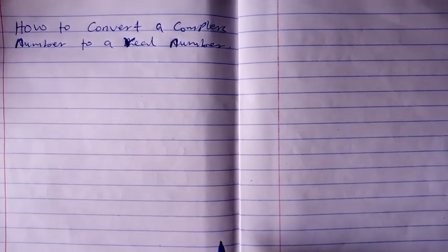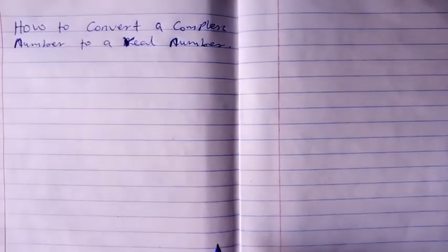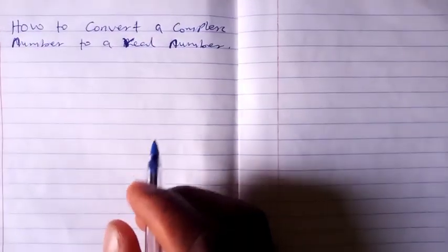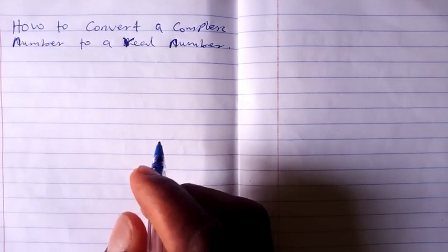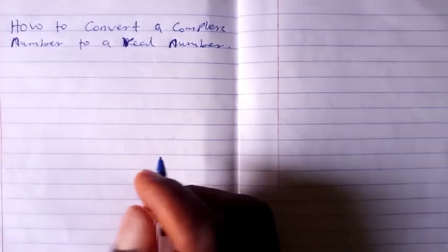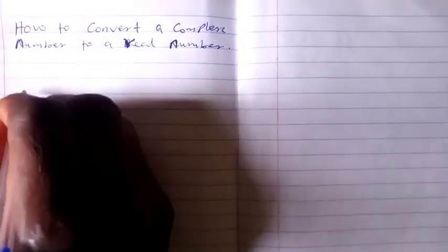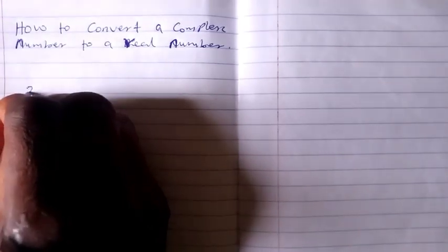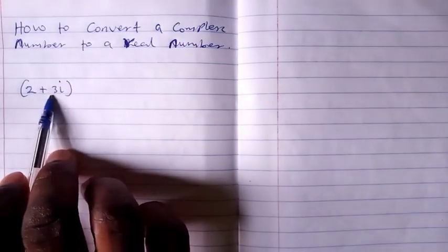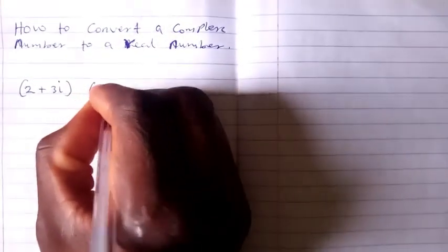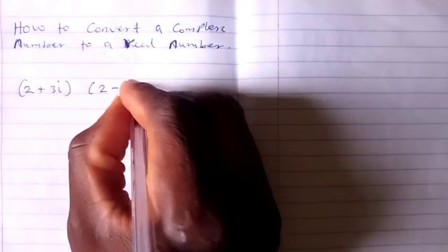Now, any complex number multiplied by its conjugate, the result will be a real number. For example, if we have a complex number, say 2 plus 3i, the conjugate of this complex number is 2 minus 3i.